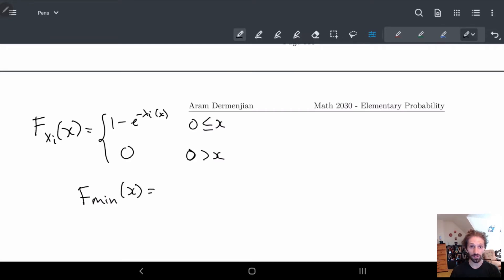So if I look at F_min(x), right? By our previous thing, what we have is one minus, and then we have to take the one minus of each one. So (1 - F_X₁(x)) times (1 - F_X₂(x)) times (1 - F_X₃(x)), etc., all the way up to (1 - F_Xₙ(x)).